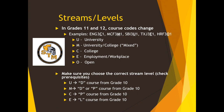We're going to begin with your streams and your levels. In grade 11 and 12, course codes change. For the past two years, you've been familiar with 2D, 2P, and 2L, but in grade 11 we move away from academic, applied, and locally developed. It moves to U for university, M for university and college — which we refer to as mixed — C for college, E for employment and workplace, and O for open.